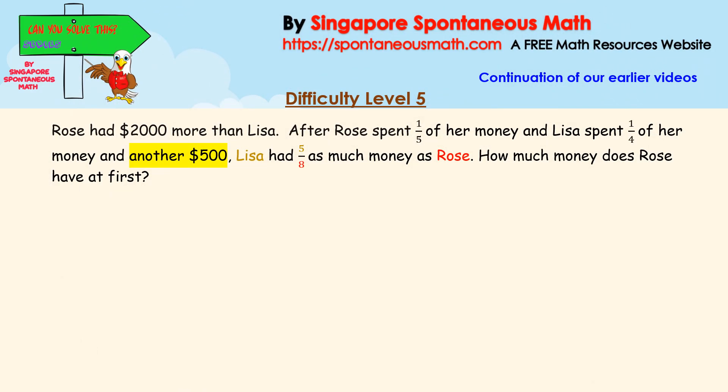Rose had $2,000 more than Lisa. After Rose spent one-fifth of her money and Lisa spent one-quarter of her money and another $500, Lisa had five-eighths as much money as Rose. How much money does Rose have at first?